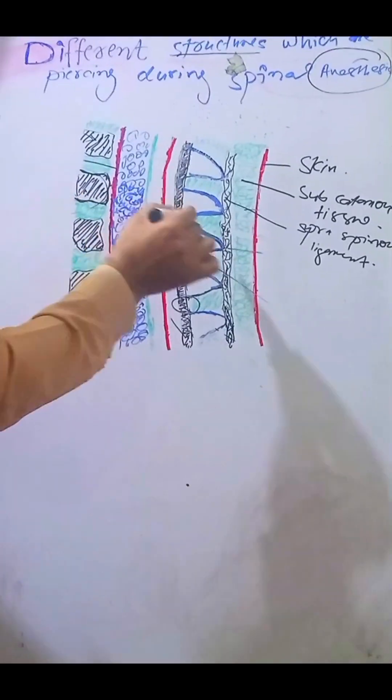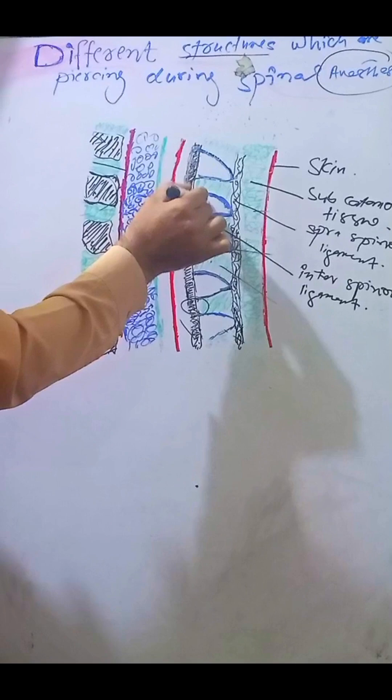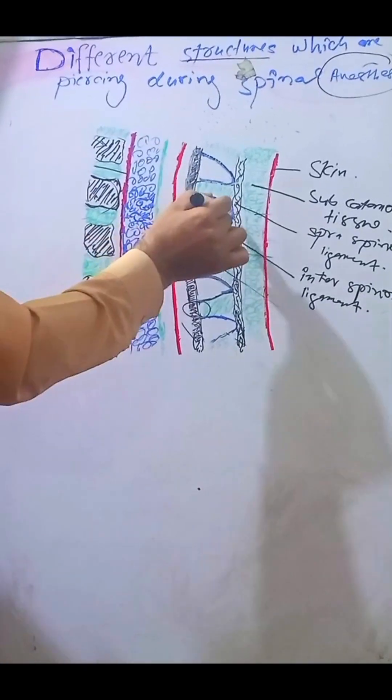The fourth one is the interspinous ligament, which lies between these spinous processes.